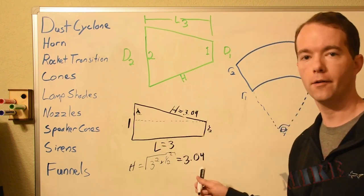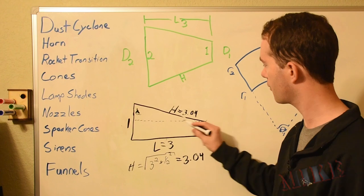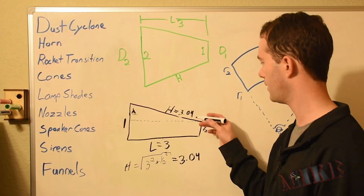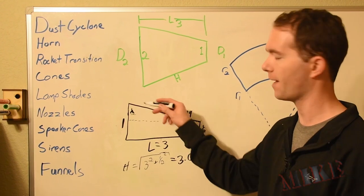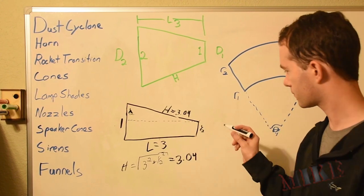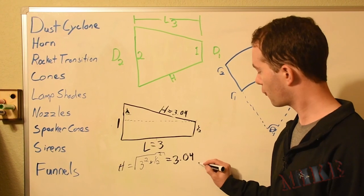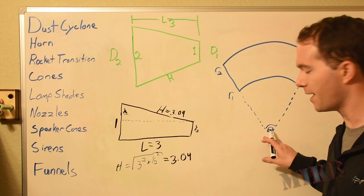So that's one way you could have done it. Of course, you could have found this angle here by using the arc tangent of 1 half over 3. You get 9 and some change. But knowing this now, 3.04, what we need to figure out is our theta.